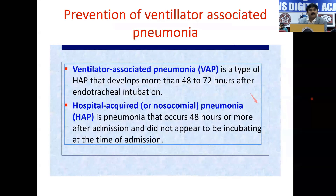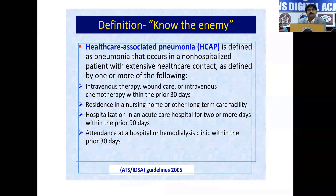One of the most common complications of long-term ventilation is ventilator-associated pneumonia. To define it: ventilator-associated pneumonia is a type of hospital-acquired pneumonia that develops within more than 48 to 72 hours after endotracheal intubation. Similarly, hospital-acquired pneumonia is when the patient is in the hospital for longer than 48 hours and is not incubating at the time of admission. There is also healthcare-associated pneumonia, wherein pneumonia occurs in a non-hospital patient but the patient has been in contact with healthcare — for example, attending the hemodialysis clinic or receiving chemotherapy.